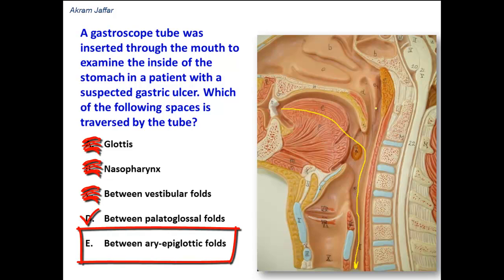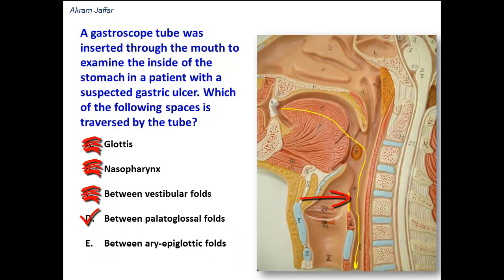Between the aryepiglottic folds: these folds are located between the arytenoid cartilages and the epiglottis at the inlet of the larynx. The tube should not pass between the aryepiglottic folds, because otherwise it would go into the larynx. A bronchoscope can pass between the aryepiglottic folds, between the vestibular folds, and between the vocal folds — but not a gastroscope.